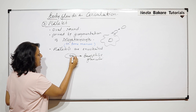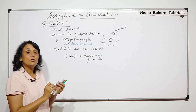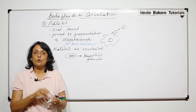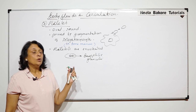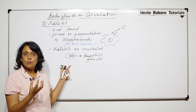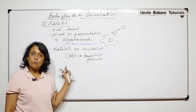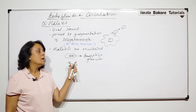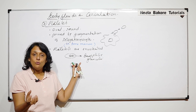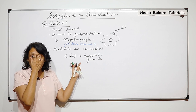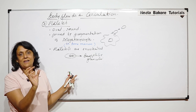Basophilic means they can be stained by basic dye, and they are densely arranged in the center part. So if we see the platelets under the microscope, the center part appears dark. There is a confusion that this dark center is a nucleus, but it is not a nucleus — it is cytoplasmic basophilic granules arranged in the center.